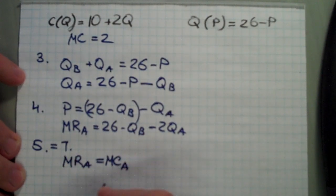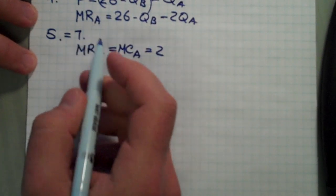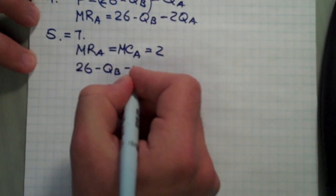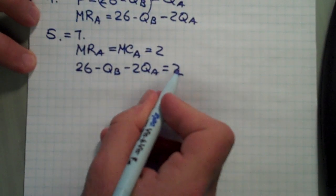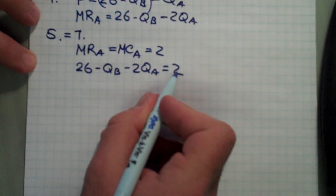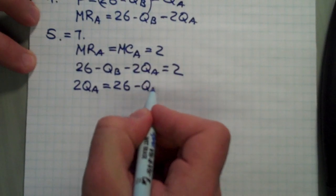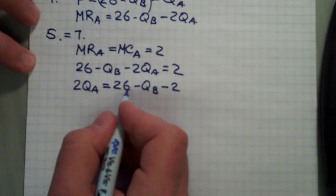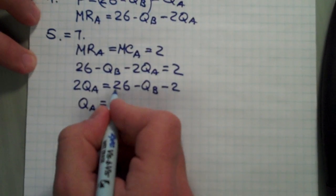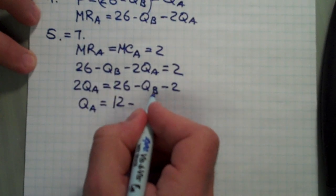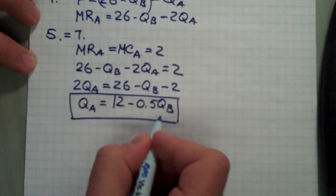To find the quantity, we set marginal revenue A equal to marginal cost A. Marginal cost is 2, and marginal revenue is 26 minus QB minus 2QA, so: 26 minus QB minus 2QA equals 2. Expressing QA as a function of everything else: 2QA equals 26 minus QB minus 2, so 2QA equals 24 minus QB, giving QA equals 12 minus 0.5QB. This is the quantity firm A produces given any quantity of firm B.